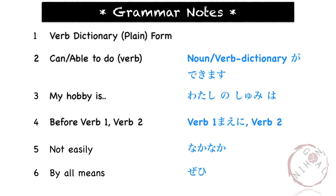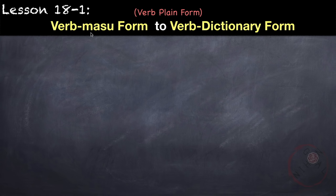Here are the grammar points that we would learn in this lesson. The first one is how to modify verbs from masu form to dictionary form. Dictionary form is also known as the basic or plain form of the verb. It is called dictionary form because this is how verbs are written in the Japanese dictionary.